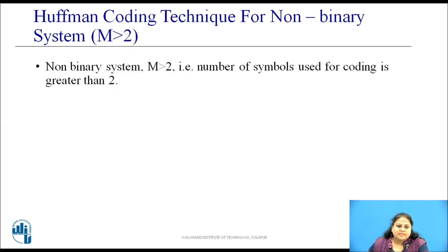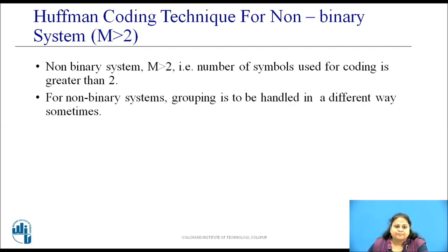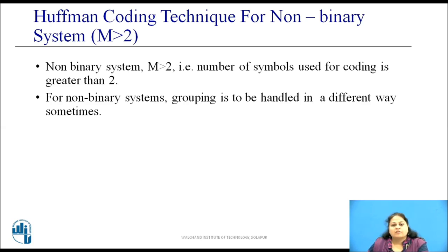A non-binary system is a system where the number of symbols used to code is greater than 2, that is m is greater than 2. For non-binary systems, the grouping is to be handled in a different way for Huffman coding technique. Let us see how.